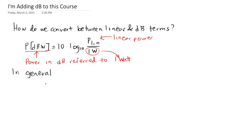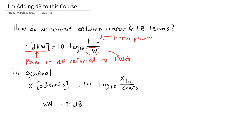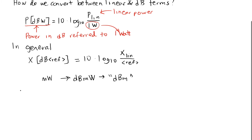In general, we convert a linear number x into dB by taking 10 times the log base 10 of that linear value divided by a reference, and then we name the units 'dB-reference.' So we could use milliwatts and have dBmW, usually abbreviated dBm. We could use joules and have dBJ. The reason we divide by a reference is that we can't take the log base 10 of a unit — we divide by the reference to get a unitless value and then convert. Typically, power and energy are the things we convert into decibel units.